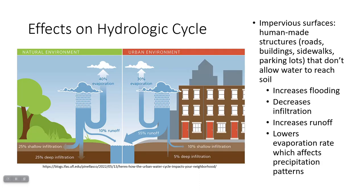In an undisturbed natural environment, about 40% of precipitation will evaporate back into the air, about 50% will infiltrate into the ground, and about 10% will run off to a nearby stream. However, cities tend to be covered with impervious surfaces that don't let water pass through — concrete, asphalt for roads — so a lot more water runs off. In an urban environment, runoff increases from 10% in a natural environment to a full 55%, meaning more than half of the rain over a city just runs off to the nearest river or stream.